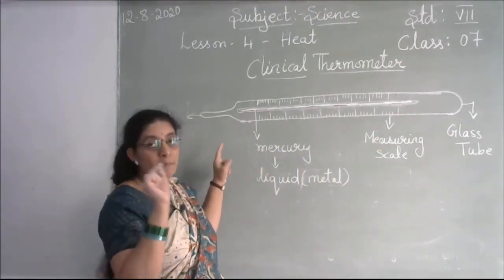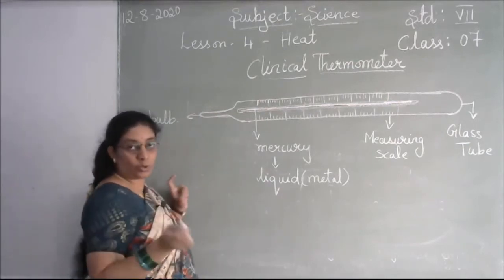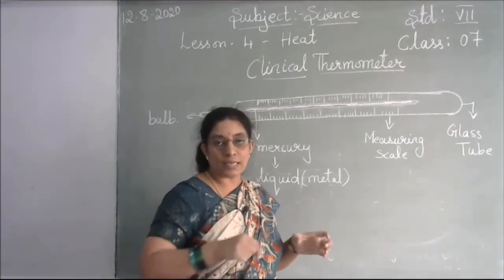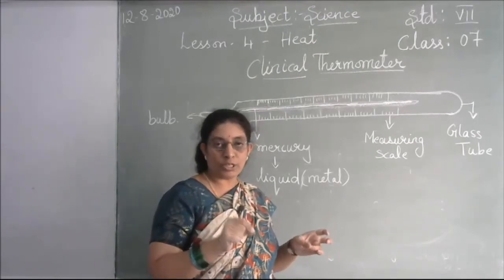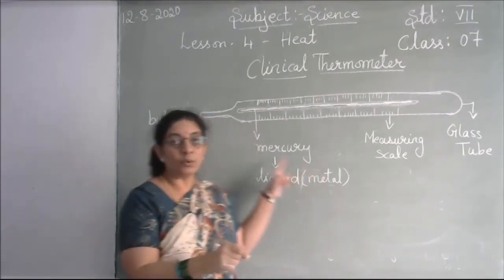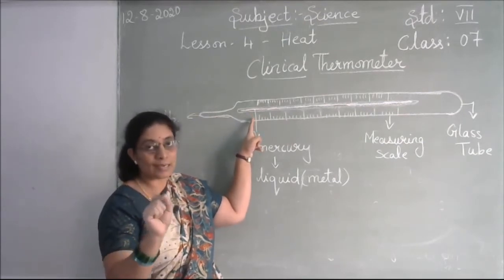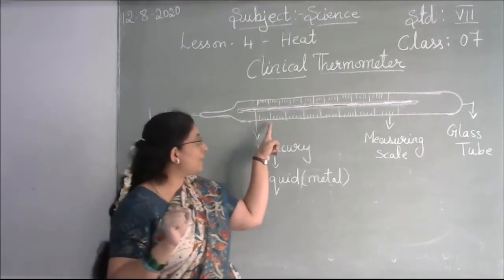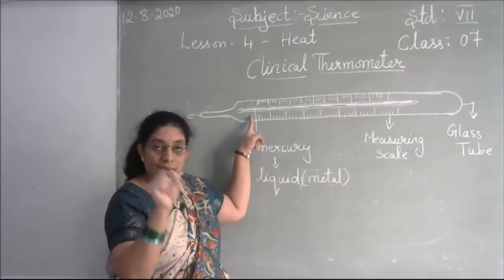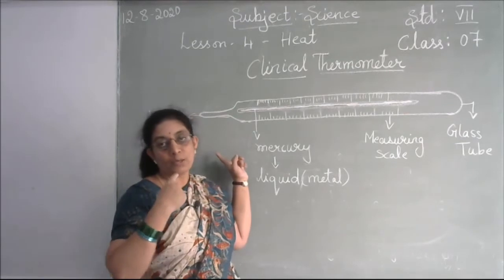When you go to the hospital, the clinical thermometer is kept in a solution. They take it out and shake it — this brings the mercury level back to the starting point, which is 35 degrees on the measuring scale. After shaking and bringing it to the starting point, the bulb is placed under the tongue of the person who has fever.